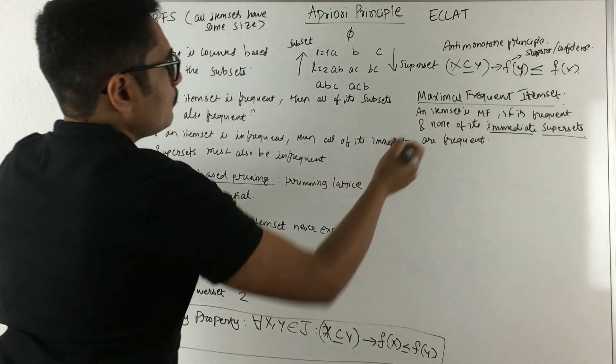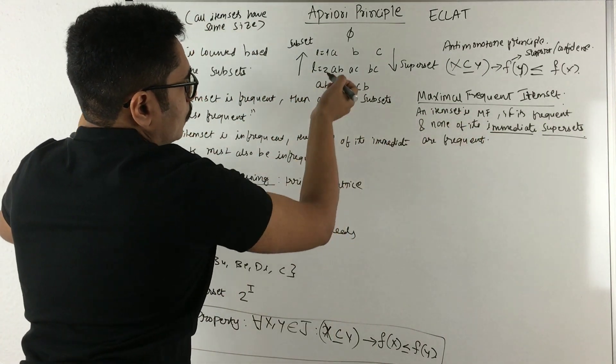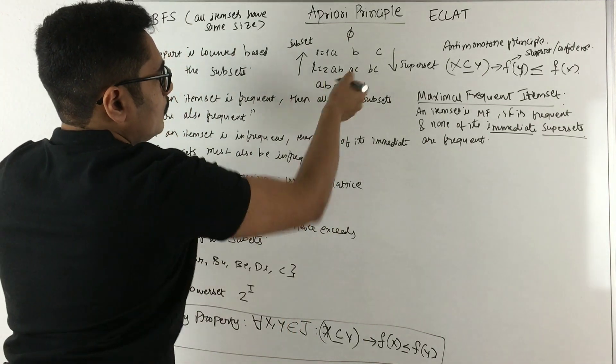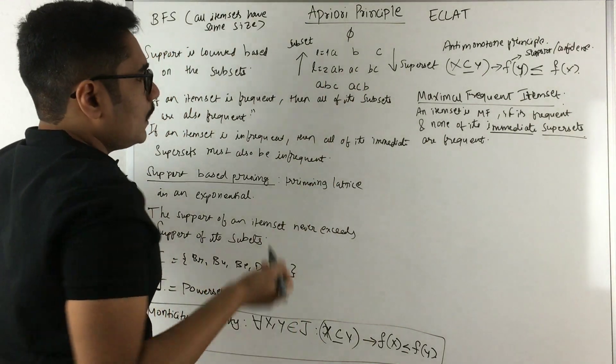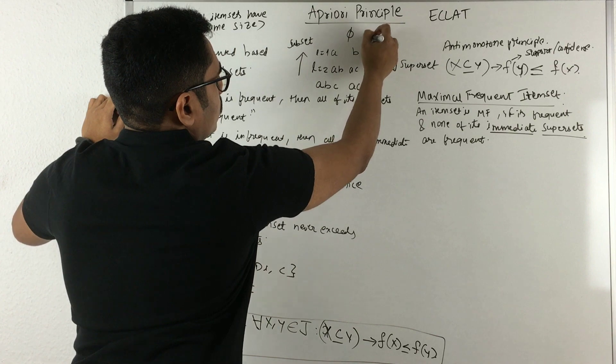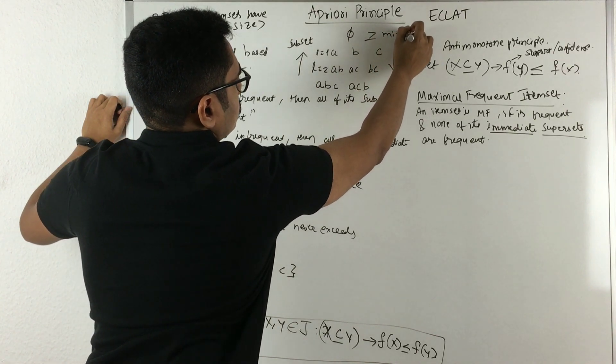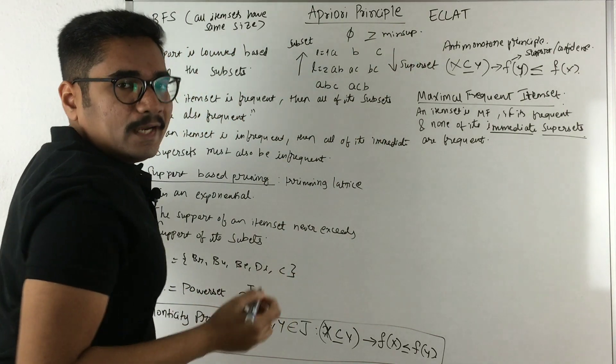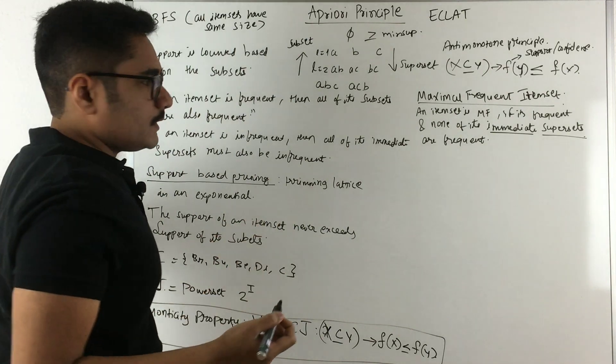That is, they will be infrequent. How it happens is that it will fail the minimum support condition. So that's what a maximal frequent item set is.